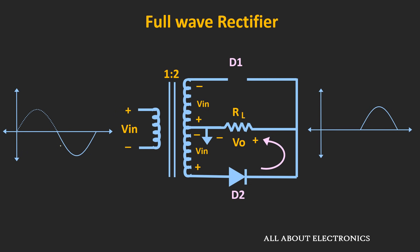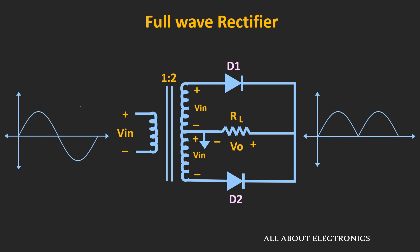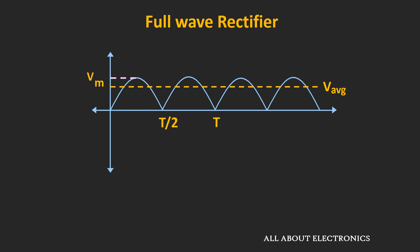Similarly, during the negative half cycle, diode D1 will remain off while diode D2 will conduct. The current will flow through the circuit in this fashion. If we assume diode D2 as an ideal diode, then this input voltage Vin will appear across this load resistance. During both the positive and the negative half cycles, the current flowing through the load resistor is in the same direction. So for the negative half cycle also, we will get a positive waveform. If we combine the positive and the negative half cycles, the output waveform of this rectifier circuit will look like this.